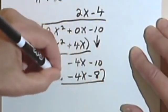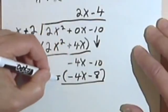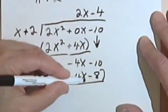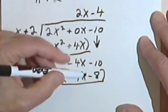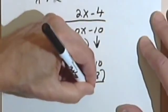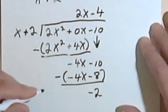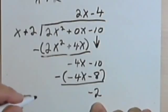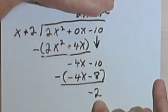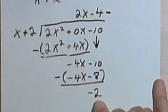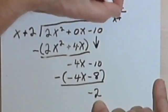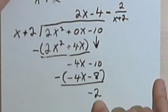I'm going to subtract. -4x minus -4x will be 0. -10 minus -8. Minus -8 is the same as +8. So I've got -10 + 8, that gives me a -2. And I'm going to take this -2 and use it, since it's my remainder, use it as a fraction up here. So I'll put my negative sign in right here, and then I've got 2 over x + 2.